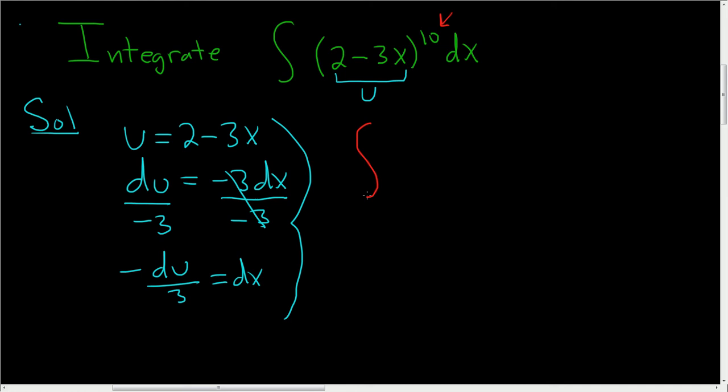All right, so this is going to be the integral of u to the 10th. And dx, it's right here, is negative du over 3. So you think of it as negative 1/3 du. And whenever you have a number, it's usually better to just pull it out. It's safer to pull out. So there it is, negative 1/3 du.